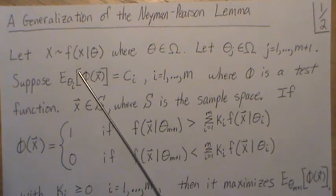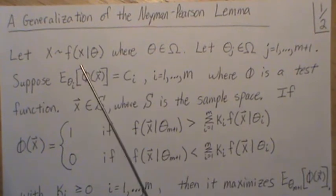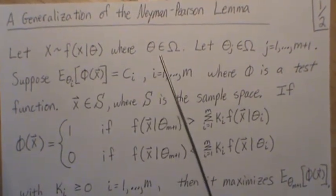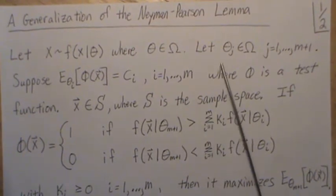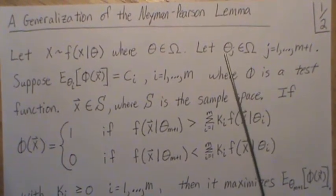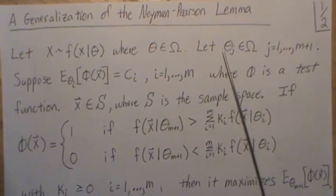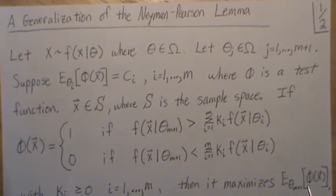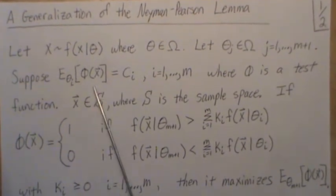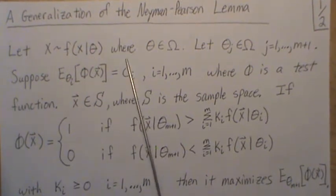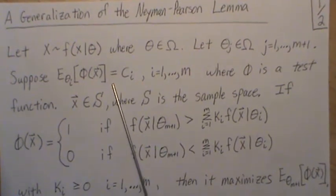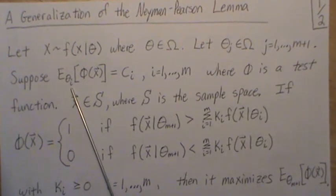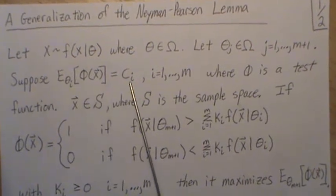Let x be distributed with some distribution f of x given theta, where theta is the parameter that lives in a parameter space omega. We have m plus 1 thetas that live in this parameter space that we're going to use in this theorem. Let's suppose that m of them satisfy this equation, so the expected value of our test function given that one of those theta i's, where i goes from 1 to m, equals c_i.